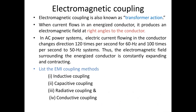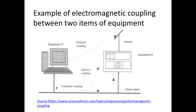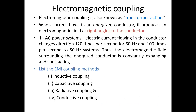Electromagnetic coupling, also known as transformer action. When current flows in an energized conductor, it produces an electromagnetic field at right angles to the conductor. In an AC power system, electric current flowing in the conductor changes direction 120 times per second for a 60 Hz system, or 100 times per second for a 50 Hz system. Thus, the electromagnetic field surrounding the energized conductor is constantly expanding and contracting.